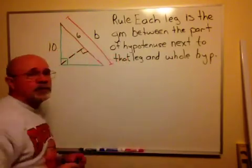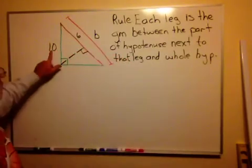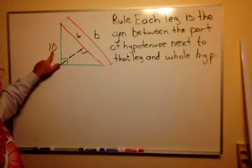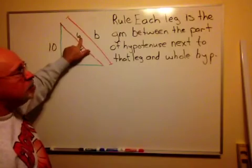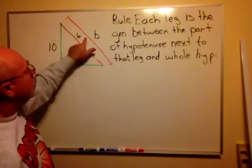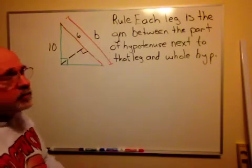Well, again, the same rule applies. The leg, which is the 10, is the geometric mean between the part of the hypotenuse next to that leg, which would be the 6, and the whole hypotenuse, which would be B.